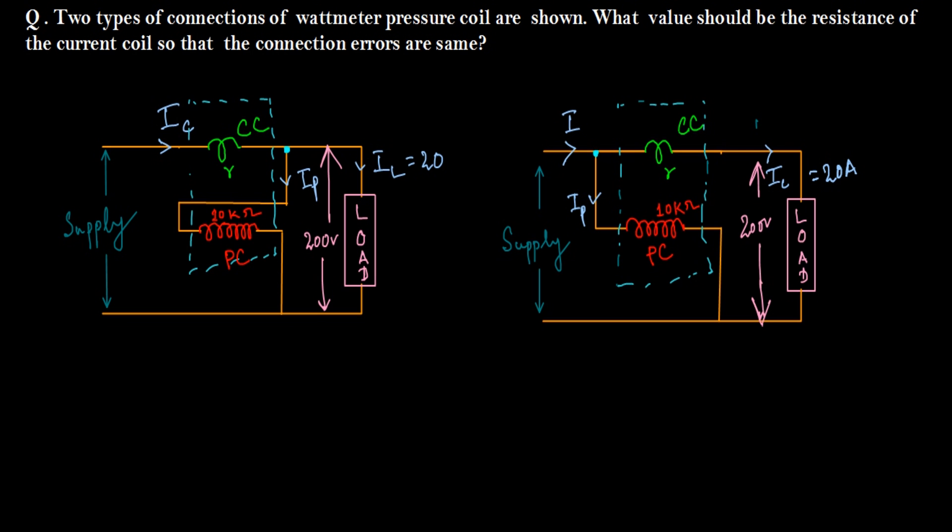Here we have a very interesting question. Two types of connections of wattmeter pressure coil are shown. Suppose this is figure 1 and this is figure 2.